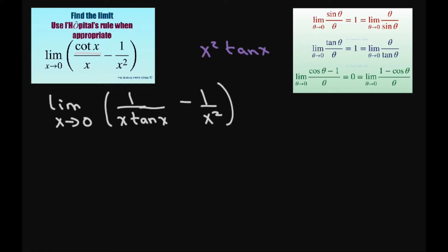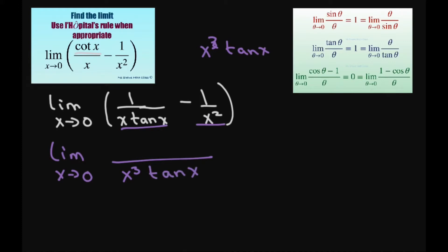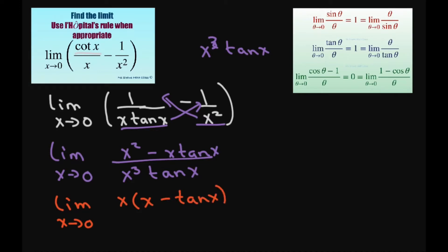I'm not going to do the least common denominator — I'm just going to multiply these two, so my common denominator is going to be x cubed times tan of x. Then you can just cross those up here to simplify your numerators. You get x squared minus x times tan of x. For our numerator, I can factor out an x, so that would be x times (x minus tan of x), divided by x cubed times tan of x.